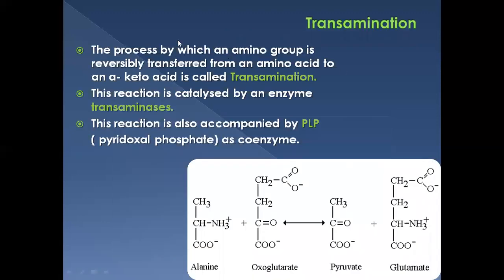There are three most important processes involved in the degradation of amino acids: one is transamination, second is oxidative deamination, and the third is decarboxylation. We shall go through them one by one. Transamination is a process where an amino acid transfers its amino group to a keto compound, resulting in the formation of glutamate.